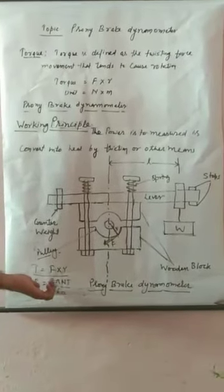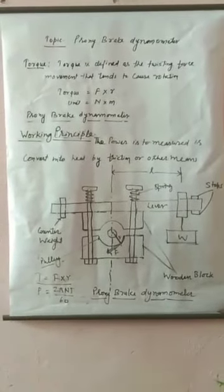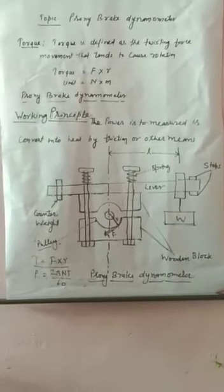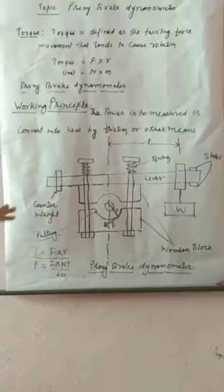From the torque we can find out the power using the formula: P equals 2πNT divided by 60. From this Prony brake dynamometer we can find out two things: first is torque, and second is the power of the motor or engine. That is useful for us to find out the torque and power for motors and engines.